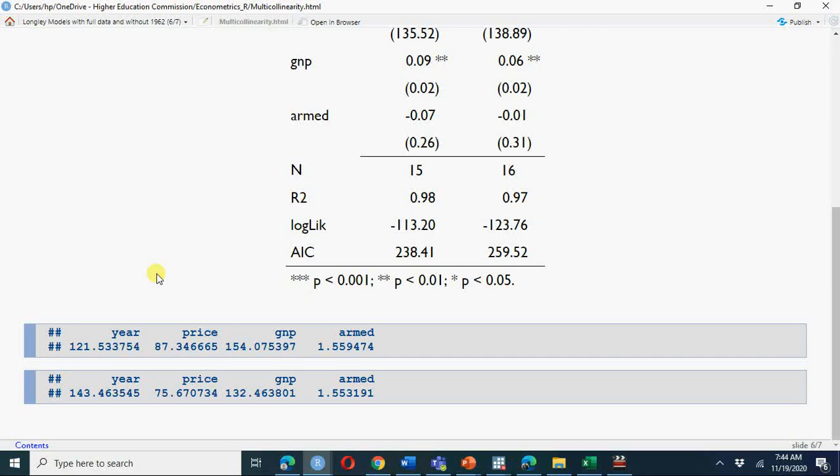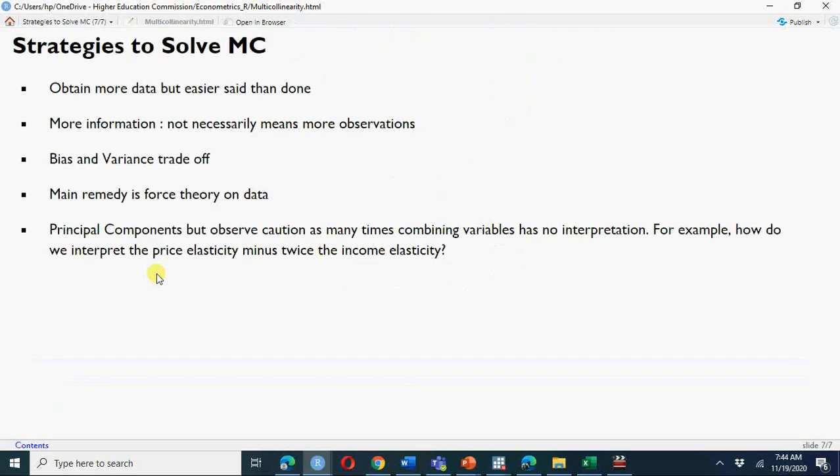Let's see the last one: how to overcome, how to resolve the problem of multicollinearity. Obtain more data, but easier said than done. If you have more data, then why haven't you used it at the first stage? Obtain more information. It does not mean more data; it means you should get more information about the phenomena under study.